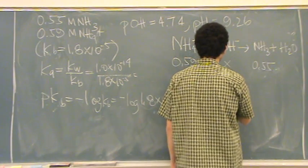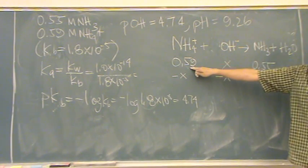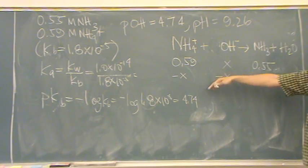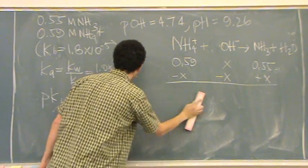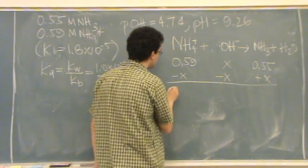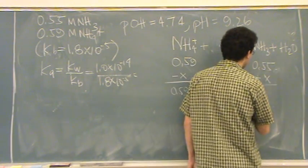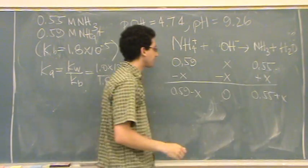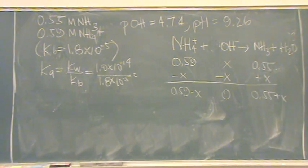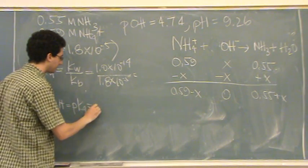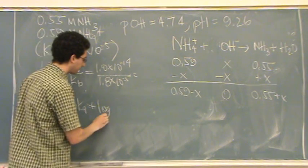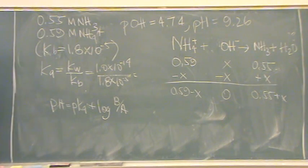So I'm going to subtract X from both sides, because I'm assuming X is the smallest value of 0.59. If it was bigger than 0.59, you'd exceed the buffer capacity. And add it here. So 0.59 minus X, 0.55 plus X. Okay, now I've got that. Now I'm going to put that into my Henderson-Hasselbalch. There's another piece of information I'll need to add in in a second, but you'll see. I'll get there in just a moment.